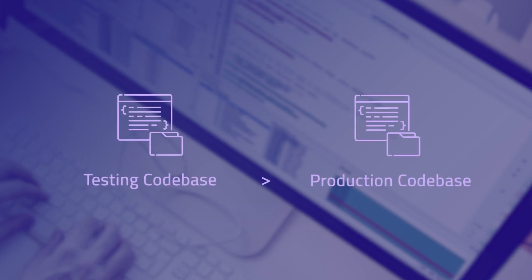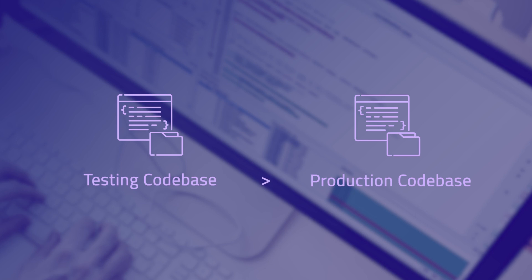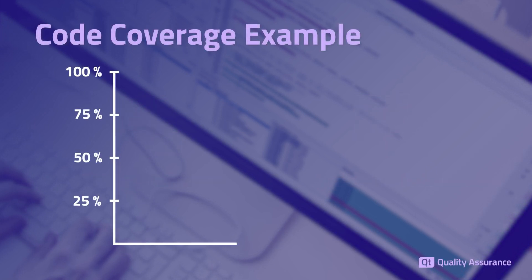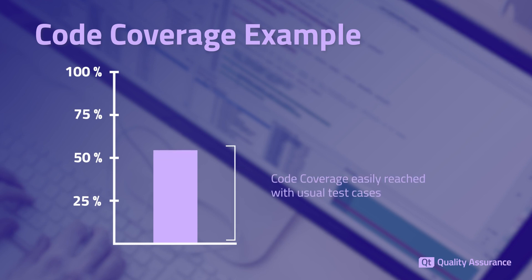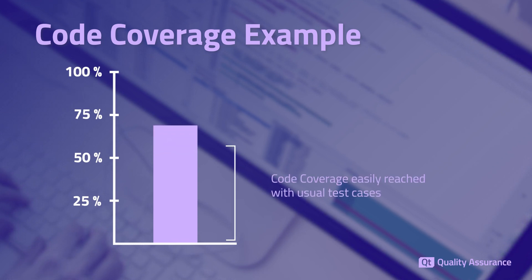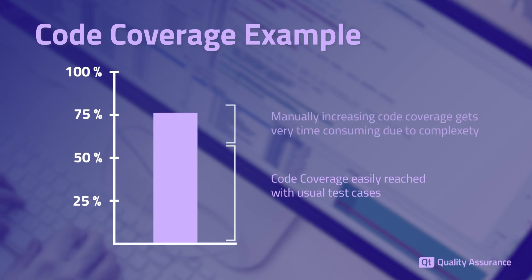For most software, the testing codebase usually has to be bigger than the production codebase in order to achieve very high code coverage. Human testers and developers often write tests based on usual test cases, which is normally enough to achieve even a high code coverage. However, when the code becomes too complex, the possible combinations of input parameters and the number of edge cases start to grow exponentially, and the last few percent of code coverage become very time-consuming and hard to achieve.